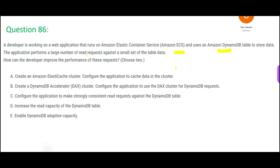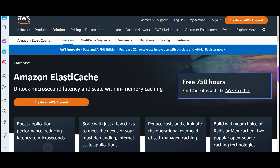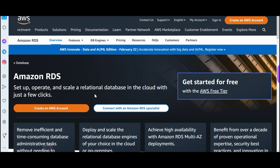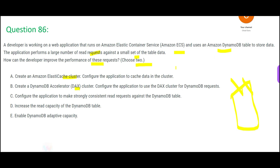There are a large number of read requests against a small set of table data — thousands of people accessing and reading this small table — and you want to improve performance. We need to choose two answers. The first option suggests plugging in an ElastiCache cluster, which provides microsecond latency with in-memory caching. However, ElastiCache is suited for databases like Amazon RDS.